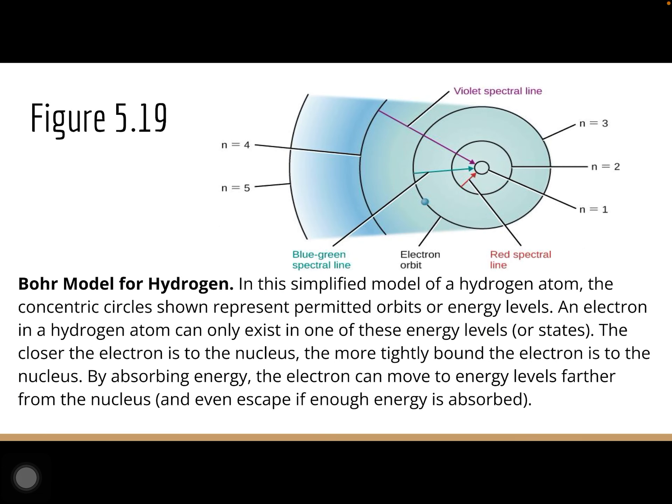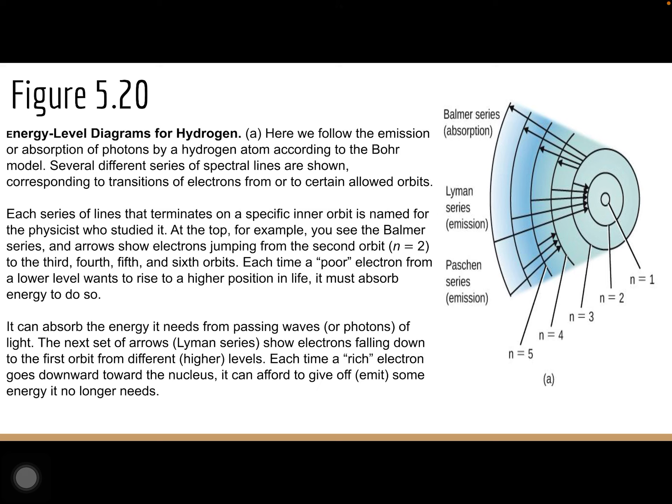So what that was explaining is that the hydrogen atom is shown with concentric circles representing permanent orbits or energy levels. An electron in a hydrogen atom can only exist in one of these energy levels or states. The closer the electron is to the nucleus, the more tightly bound it is. By absorbing energy, the electron can move up to higher energy levels further from the nucleus, and if it absorbs enough energy, it can escape entirely. To move up an energy level, the electron must absorb energy; when it drops back down, it releases that energy as light — and the amount of energy released determines what color or form of light is emitted.